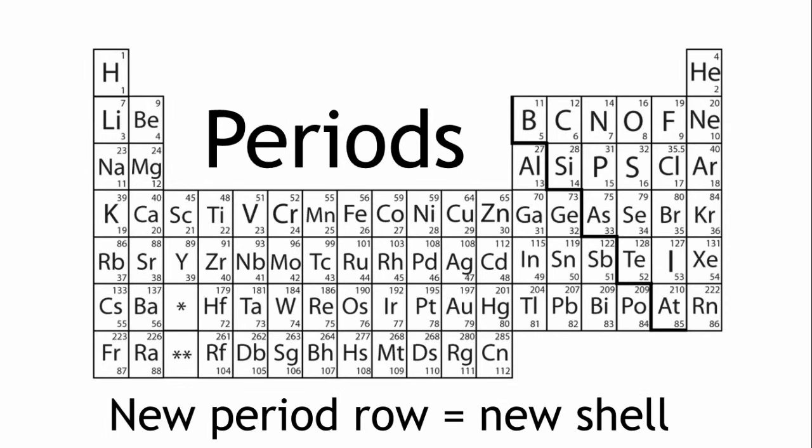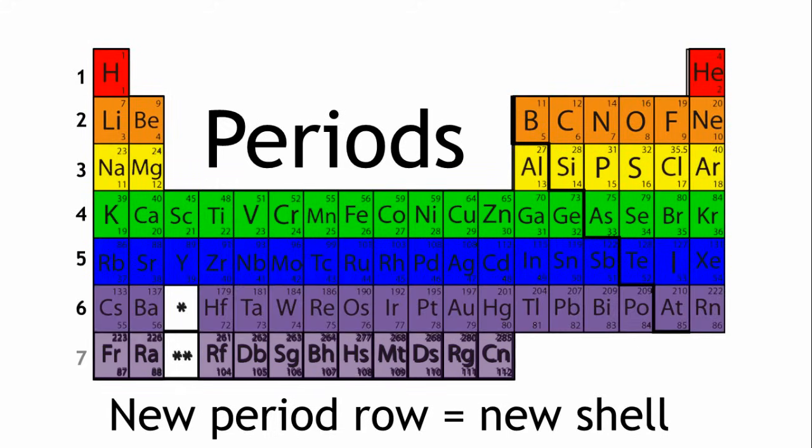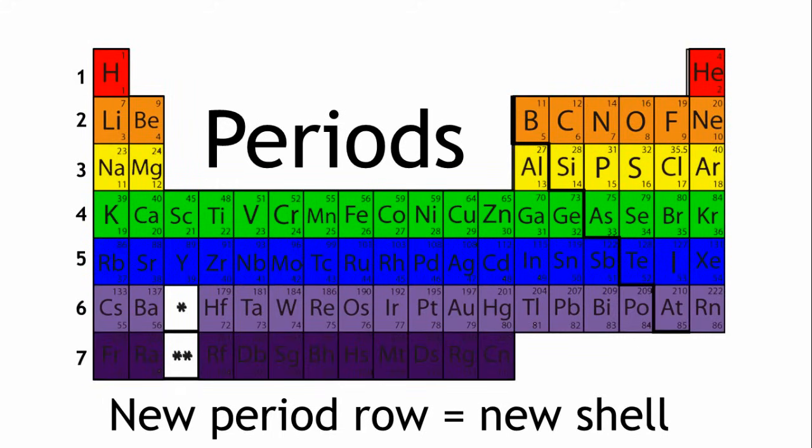Elements in the first period have one shell, and as we go down, the shells increase. Hydrogen is in the first period, it has one shell.